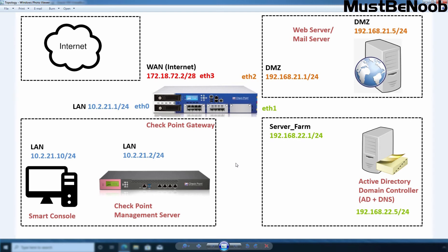Hi, this is Riyan from MustBeNoob. In this lab guide, I am going to configure IP addressing for Checkpoint R81 Security Gateway. This lab guide is the second part of the ongoing distributed deployment of Checkpoint R81. Till now, I have installed Checkpoint R81 Gaia Operating System in Oracle VirtualBox and completed the first time configuration to install the Security Gateway component on top of Gaia OS.